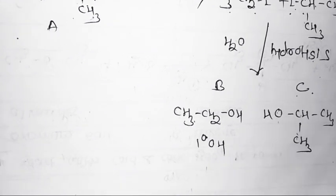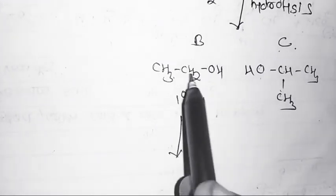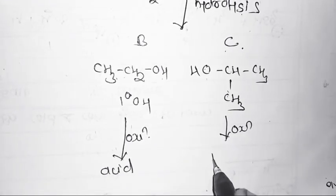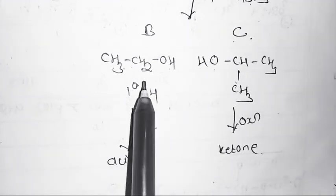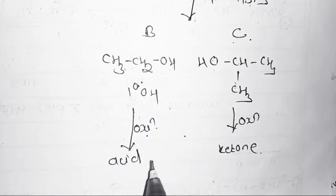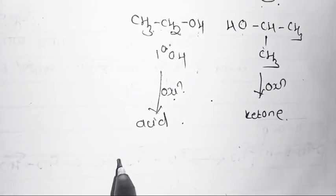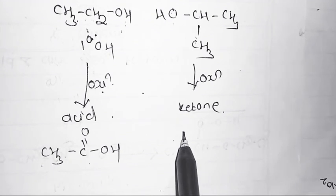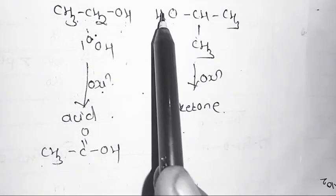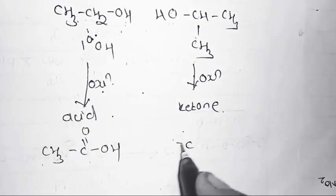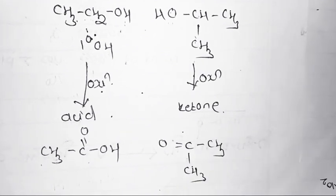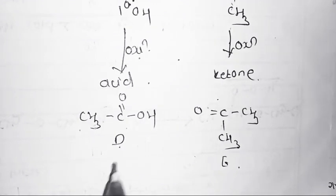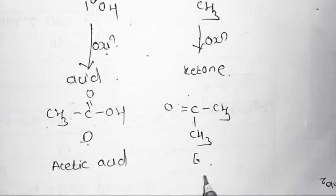After oxidation of B and C, we get acid and ketone respectively. B is a primary alcohol; oxidation gives acid: CH3CH2OH is converted to CH3COOH. C is isopropyl alcohol, a secondary alcohol; oxidation removes hydrogen to give ketone CH3COCH3. So D is acetic acid and E is acetone.